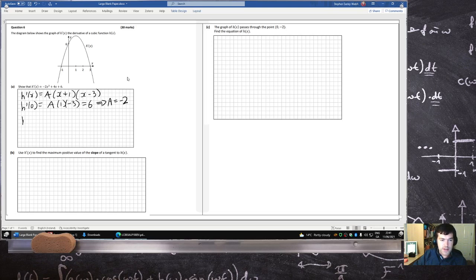So therefore h derivative will be minus 2 times x plus 1 times x minus 3, which is minus 2 times x squared minus 3x minus 2x plus 3, which is minus 2x squared plus 4x plus 6.